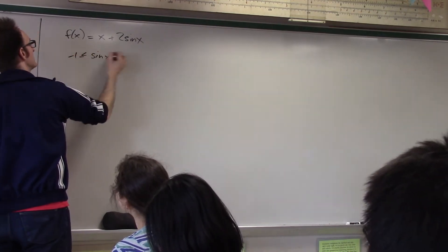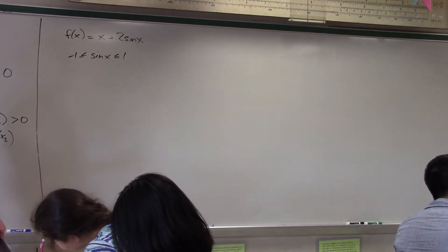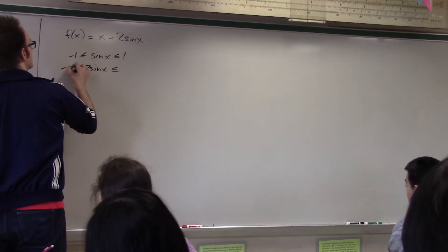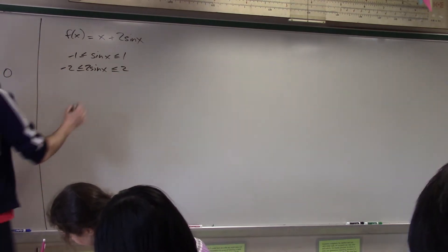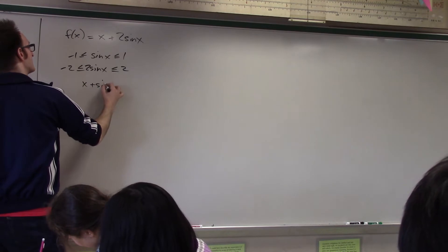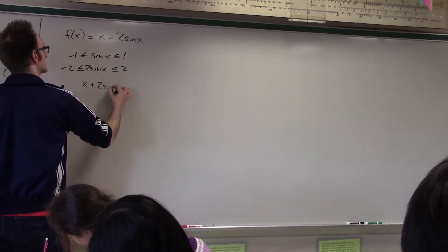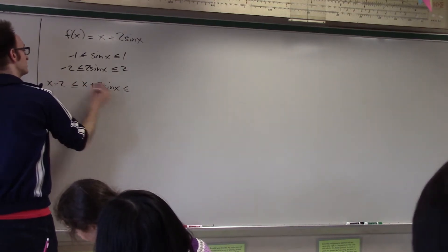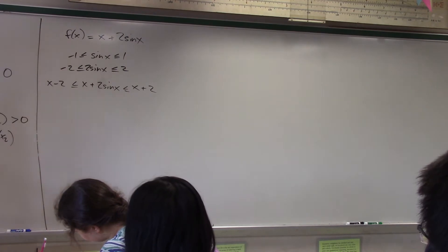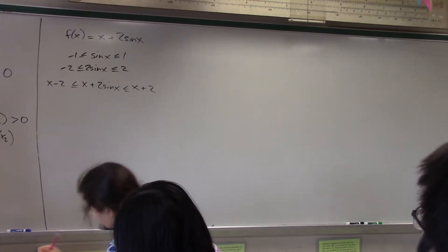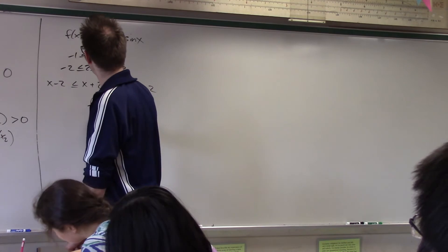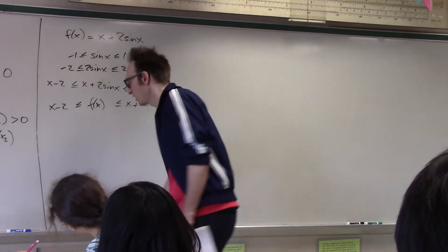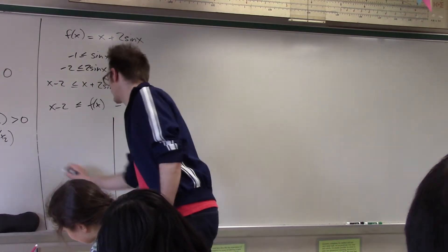So, fact, sine x is between negative 1 and 1. Remember all this crap? Yeah. So, 2 sine x is between negative 2 and 2. And, therefore, x plus sine x is between x minus 2 and x plus 2. All right, this is a valuable piece of logic because it tells me that my function must lie somewhere between x minus 2 and x plus 2. All right, so that's what I refer to as the envelope.